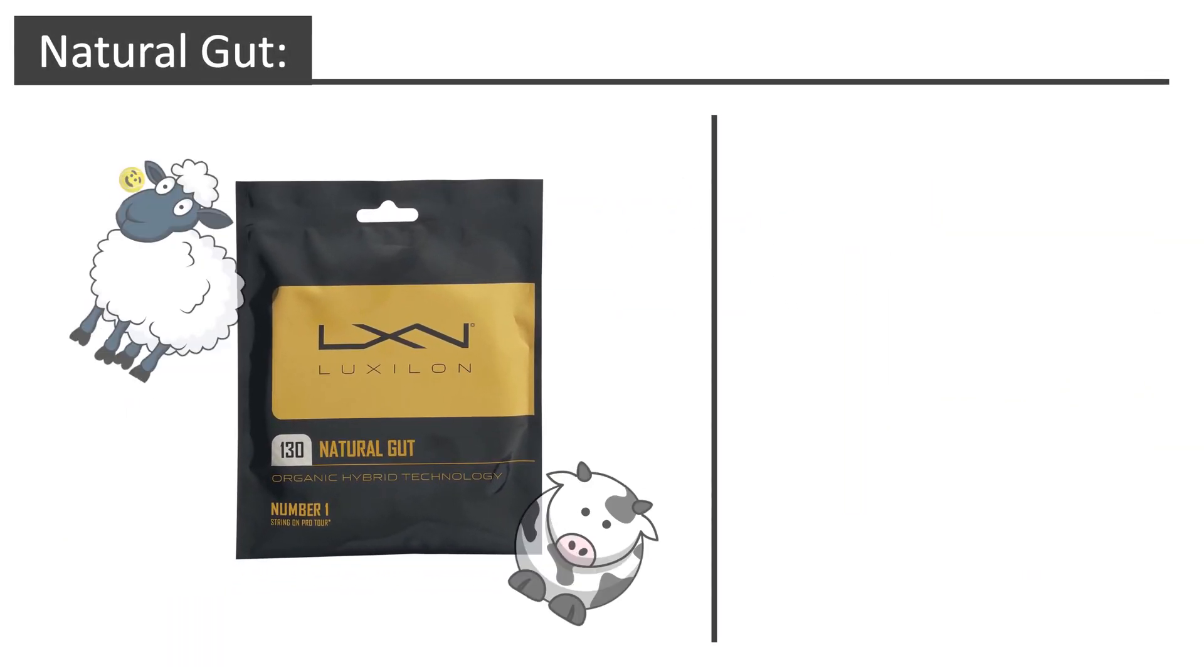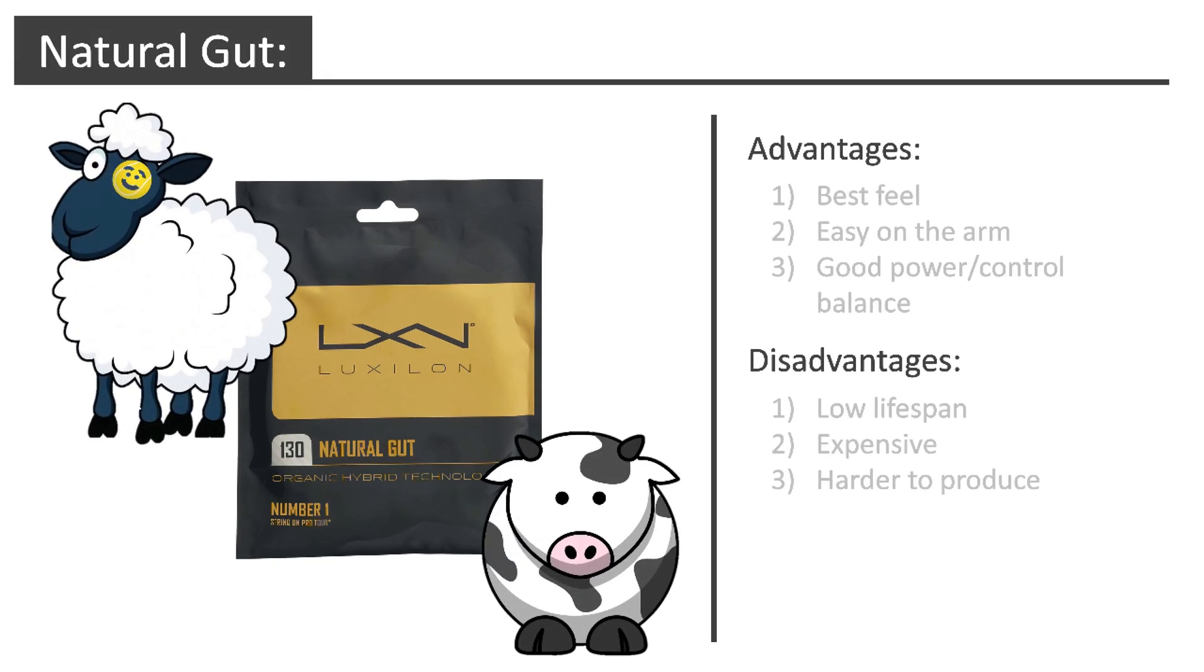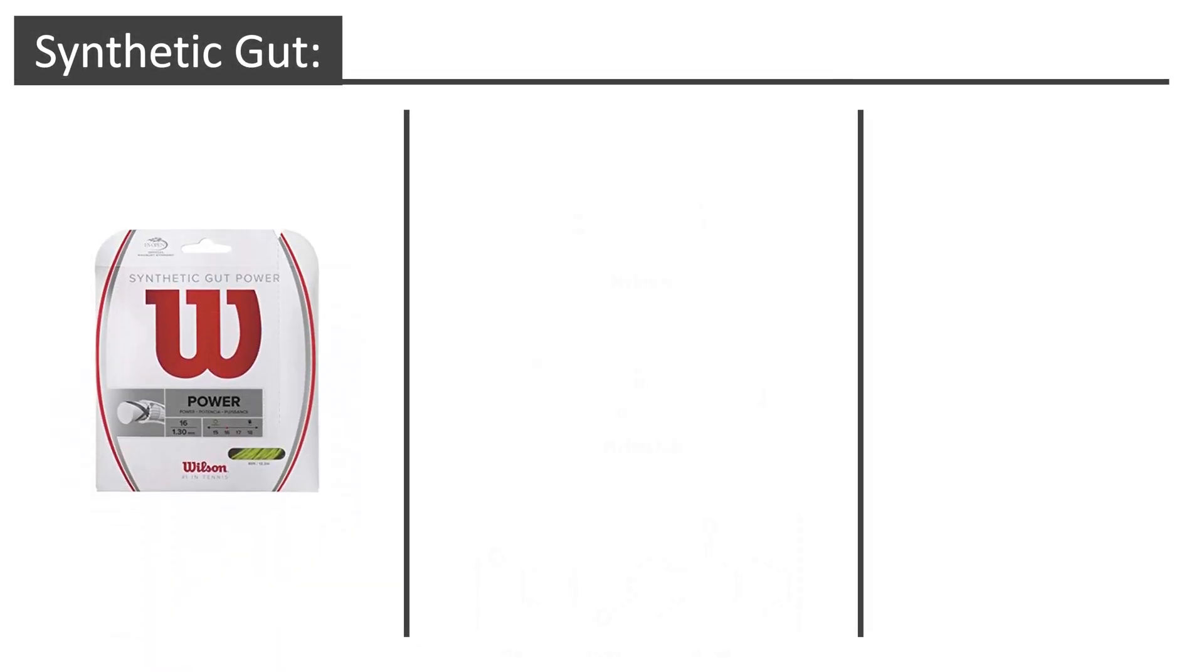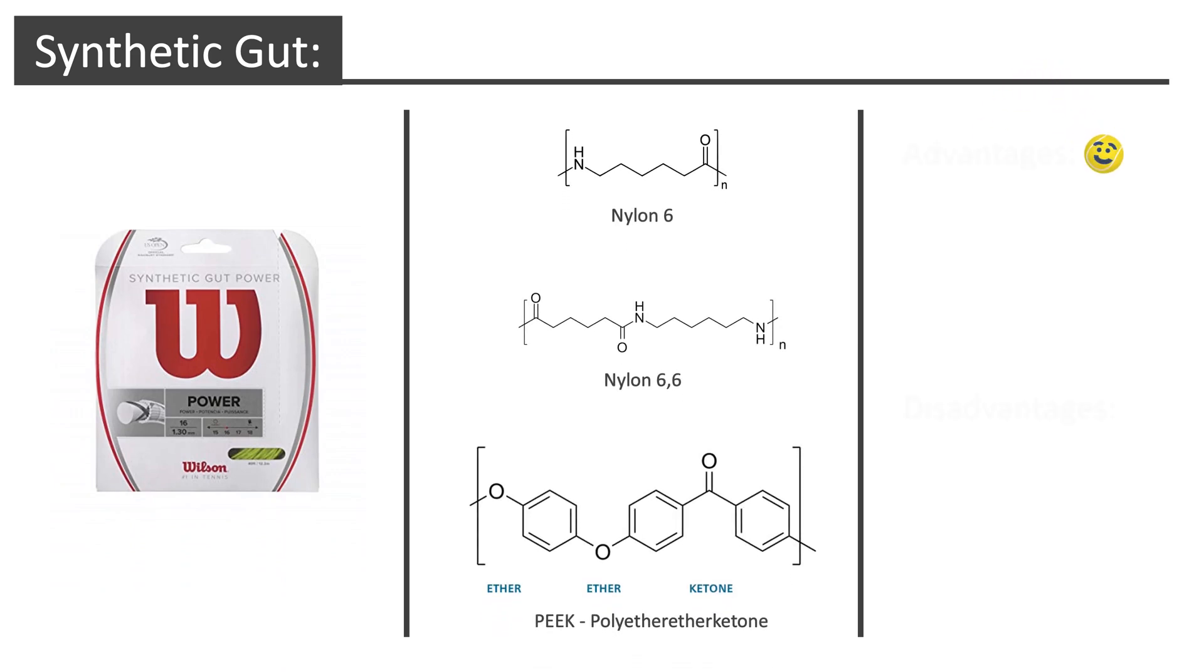Natural gut strings have been around since before the age of man-made polymers, and still provide the best feel of any tennis string today. These strings are made from individual strands of cow or sheep intestines. Synthetic gut strings mostly consist of polymers based on amide and ketone functional groups.